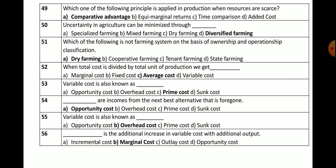Question number 49: Which principle is applied in production when resources are scarce or limited? Options: comparative advantage, equimarginal return, time comparison, or added cost principle. The correct answer is comparative advantage — the principle of comparative advantage is applied in production when resources are scarce or limited.